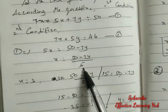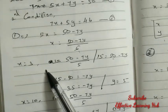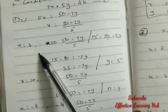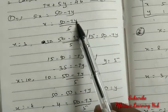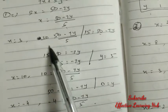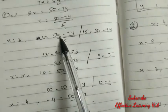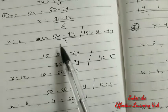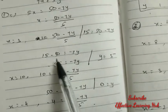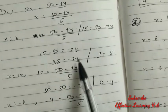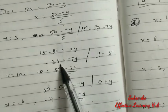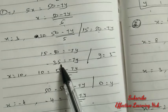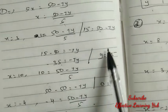From equation 1: x equal to (50 minus 7y) divided by 5. Take any 3 points — I took x equal to 3, x equal to 10, x equal to minus 4. For x equal to 3: 3 equal to (50 minus 7y) divided by 5. Cross multiply: 15 equal to 50 minus 7y. So 15 minus 50 equal to minus 7y, giving minus 35 equal to minus 7y. So y equal to 5.